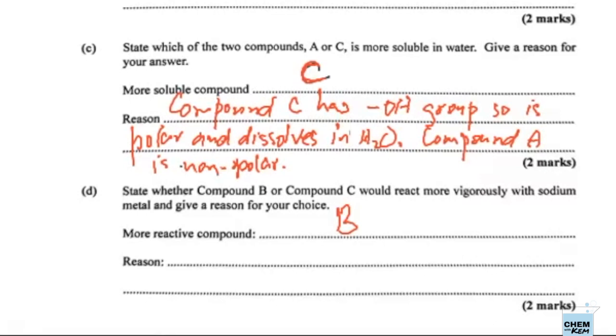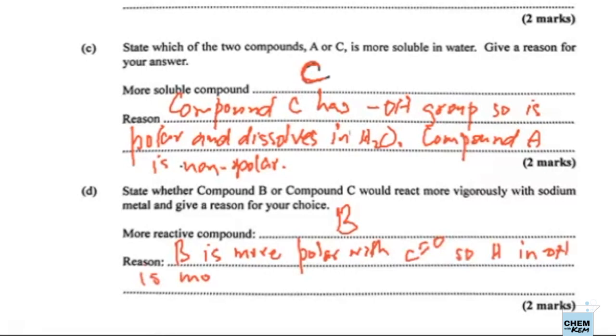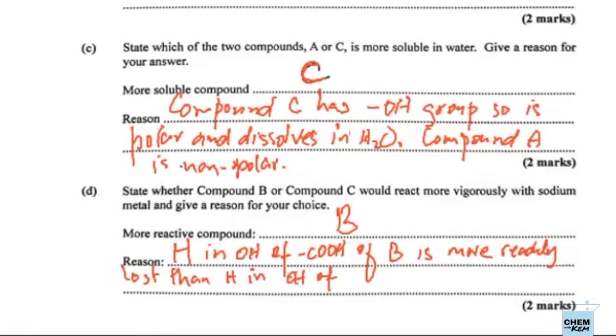We're just going to state that B is more polar. So the H in the OH of COOH in compound B is more readily lost than the hydrogen in the OH of compound C. We'll just leave it right there. So far for this question, that's 2, 4, 6, 8 marks. So let's go for the other seven marks.